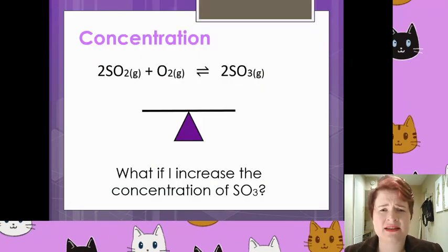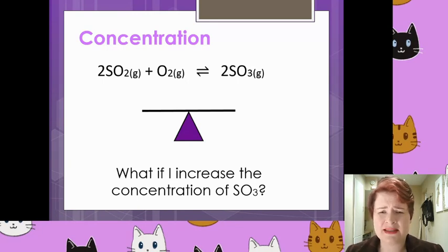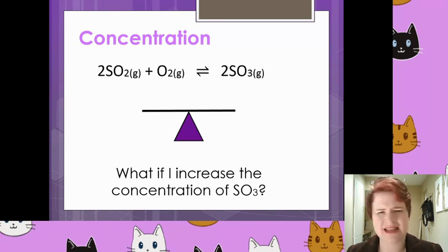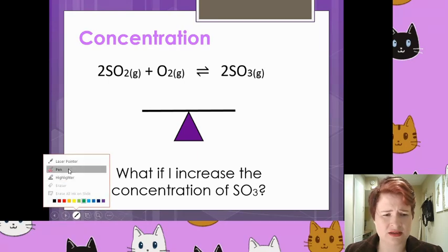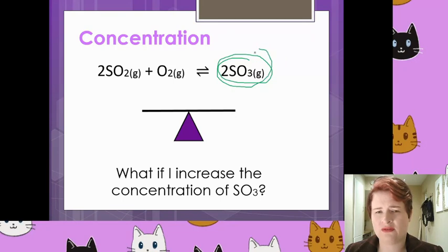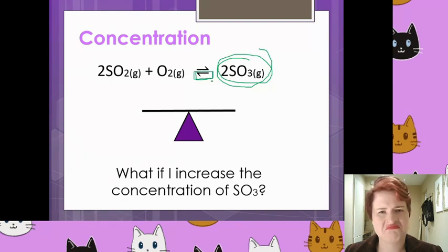How concentration affects the position of equilibrium is the most logical of all the factors. Basically, if there are more particles present, that reaction is going to happen more — which makes sense in terms of rate of reaction. So in this example, if I increase the concentration of sulfur trioxide, there's going to be more of it to thermally decompose, which is going to force the equilibrium to the left-hand side.